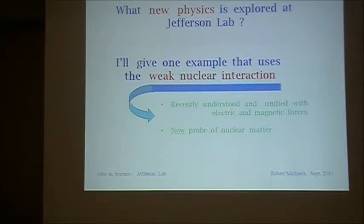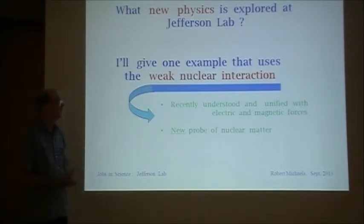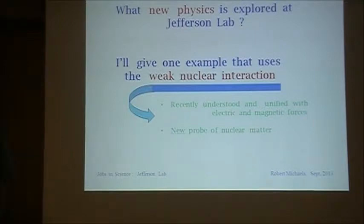I'm just going to give you one example. The example is working in the field where I work, which is to use the weak nuclear interaction. Now the weak nuclear interaction is one of the fundamental interactions, but it's not part of common experience because it's only acting on the size scale of a nucleus. It's only recently been understood, I would say within my lifetime. When I was working on a PhD, the project was one of several experimental efforts at the time to uncover what was the correct theory of the weak nuclear interaction. But in the meantime, it's been pretty well understood and it's been unified with the electric and magnetic forces. So there's a unified theoretical framework for those forces. And since it's been understood fairly well, it can be used as a new probe of nuclear matter.